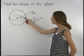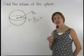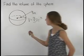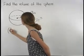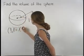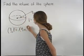Here, notice that our sphere has a radius of 9 inches, so plugging into the formula, we have 4 thirds times pi times 9 inches cubed.